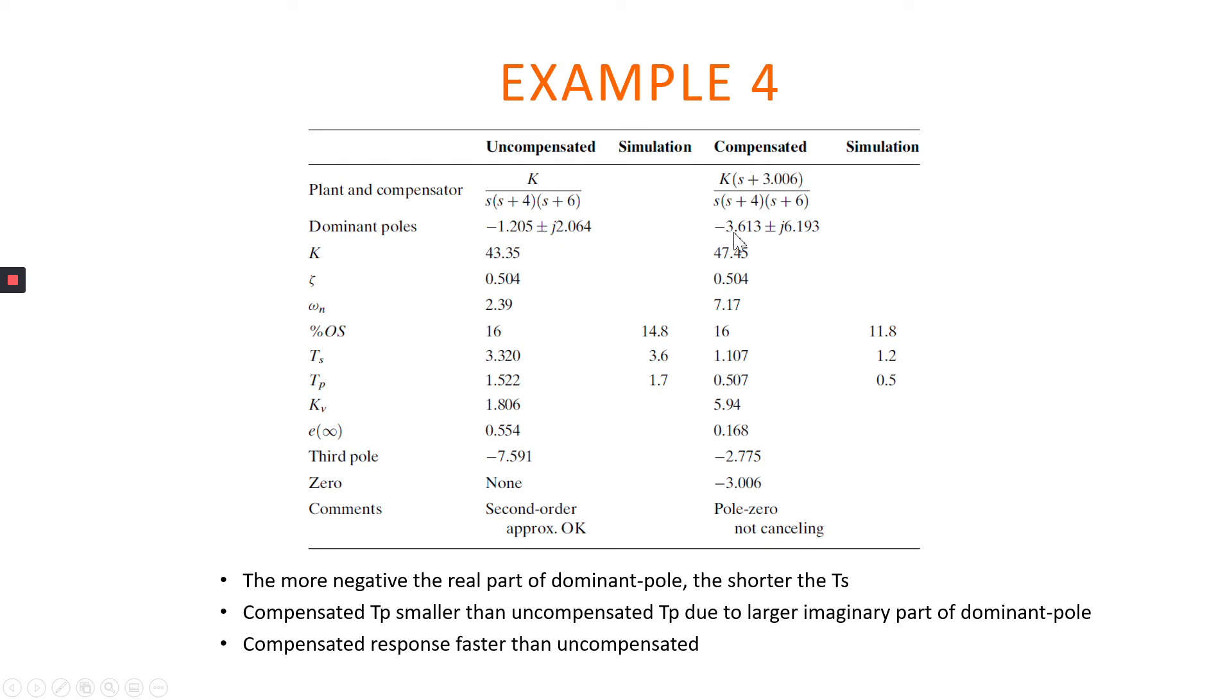So if we look at the dominant poles, which the real part has more negative value and the imaginary part has larger value, the more negative the real part of the dominant pole, the shorter the settling time. And the compensated peak time is smaller than the uncompensated due to larger imaginary part of the dominant pole.